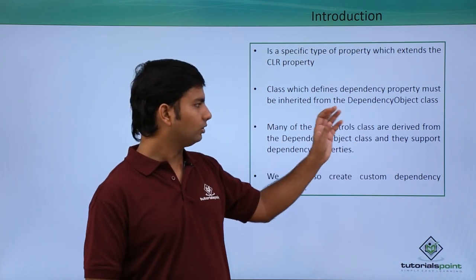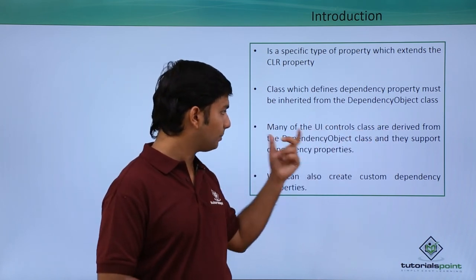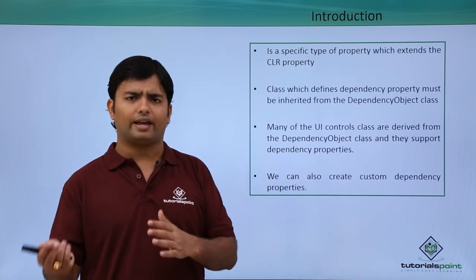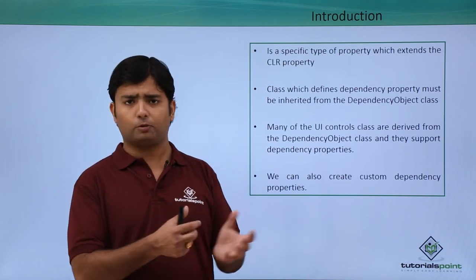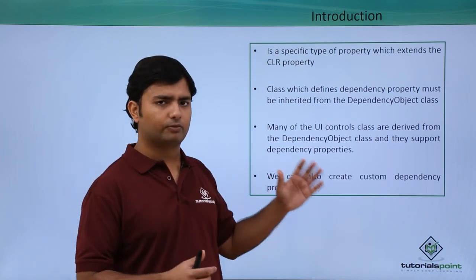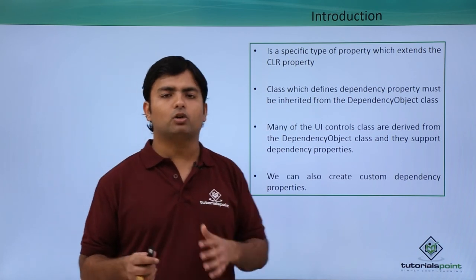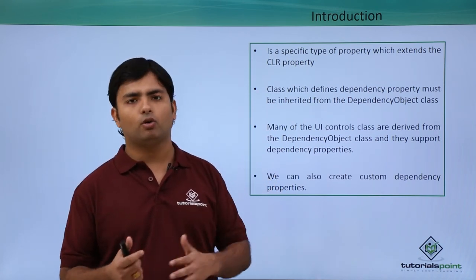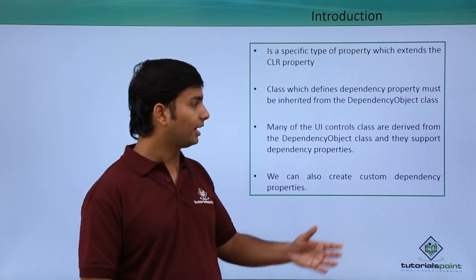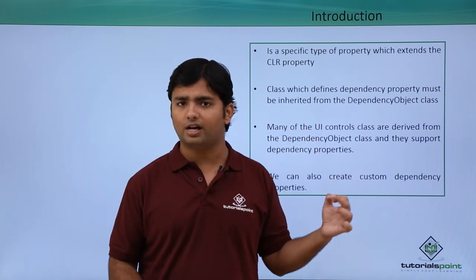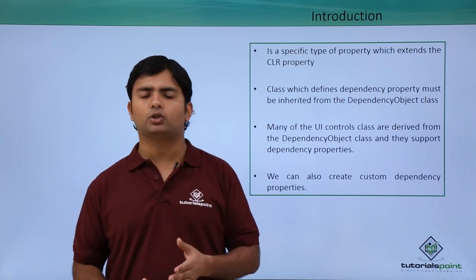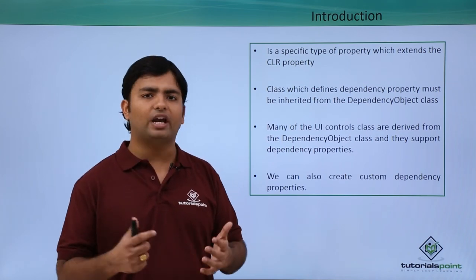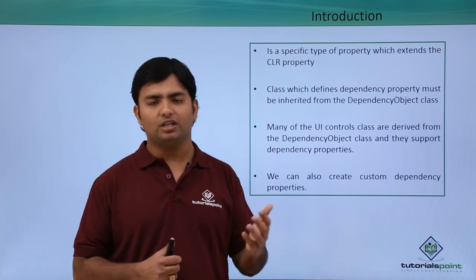Many of the UI control classes are derived from the DependencyObject class and they support dependency properties. So any control like button or text box will be derived from that. You can also create a custom dependency property by deriving your class from the DependencyObject class. Let's see a practical implementation where I'll show some predefined dependency properties and how to create a custom dependency property.